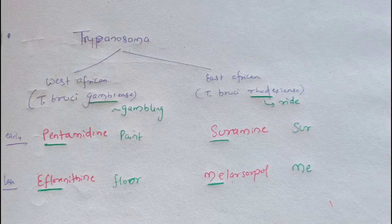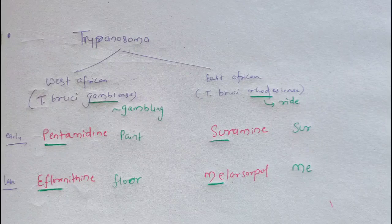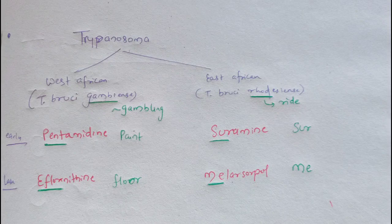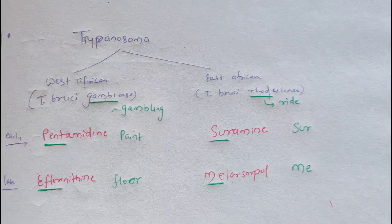For East African sleeping sickness — rhodesiense — correlate with the word 'ride,' like riding a car. When you ride a car, you usually hum a song along with it. So 'hum' gives you the mnemonic: 'sur-me' — 'sur' for suramin and 'me' for melarsoprol. I hope it was helpful, and now you can remember all four drugs easily.